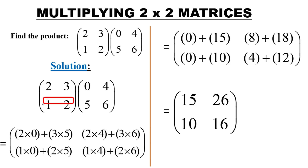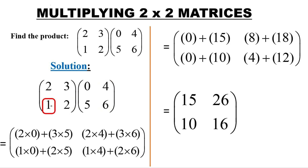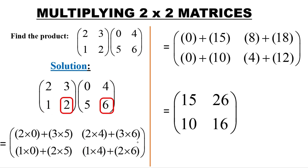On the last one, the element in the second row is multiplied by the element in the second column of the second matrix. This is how we get the product: 1 multiplied by 4, then we add 2 multiplied by 6. When we get that sum, it will give us the element in the second row, second column.